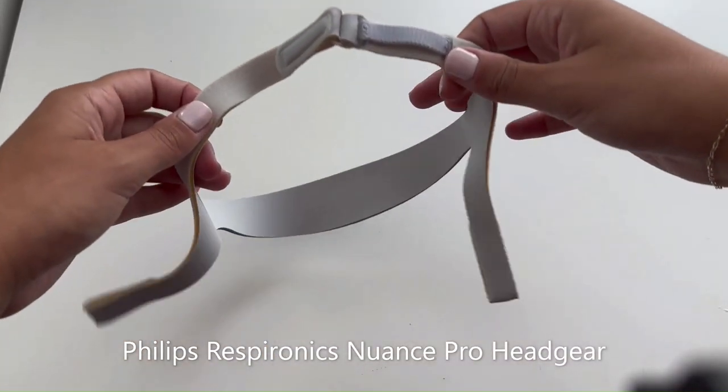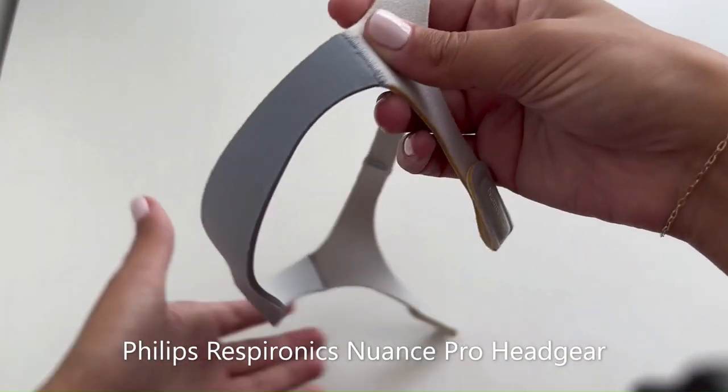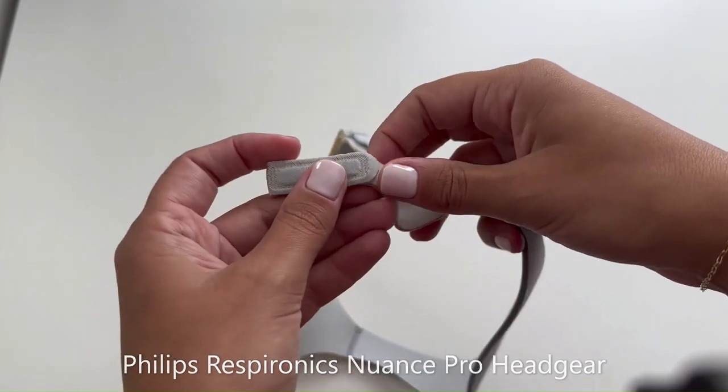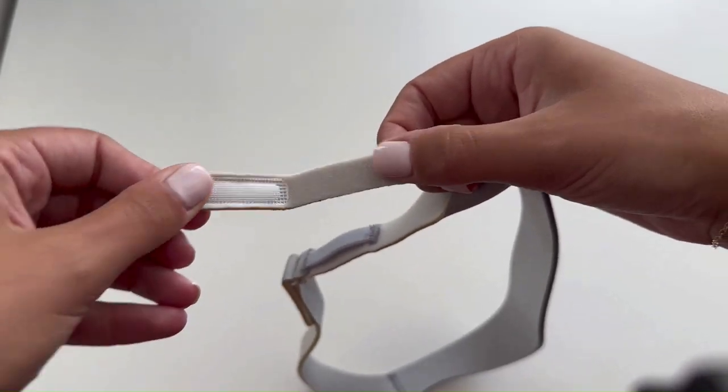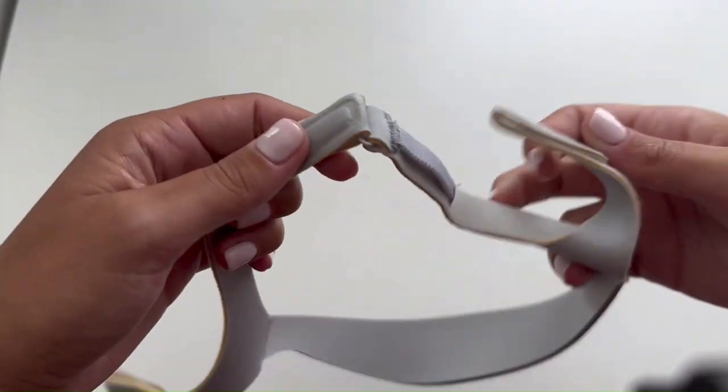The Philips Respironics Nuance Pro Headgear features four points of adjustment to help CPAP patients find their most customized fit. These adjustment points use Velcro tabs to easily adjust your headgear.